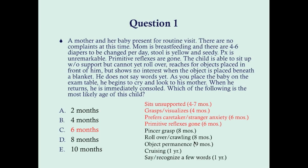Rolling over and crawling happens around eight months. Object permanence happens around nine months — if the baby doesn't have object permanence, the baby thinks the object disappeared when placed beneath a blanket, which is why he shows no interest. Cruising happens around one year of age, and saying and recognizing a few words is also around one year. All the things this baby can do happen before six months, so we can guess this baby is six months old. He can't be four months because stranger anxiety usually sets in around six months; and since he can't roll over or crawl, he's probably not eight months old.